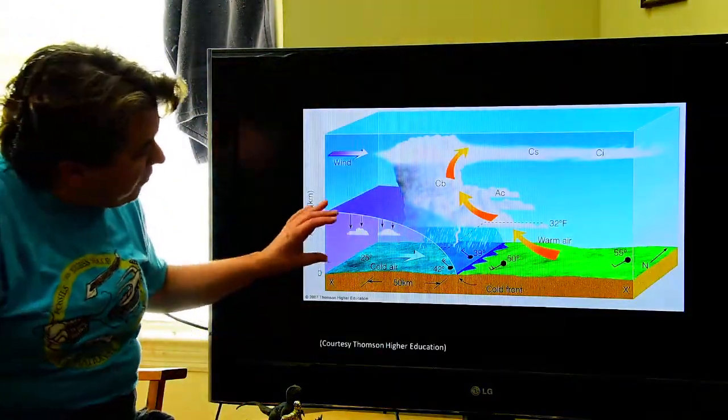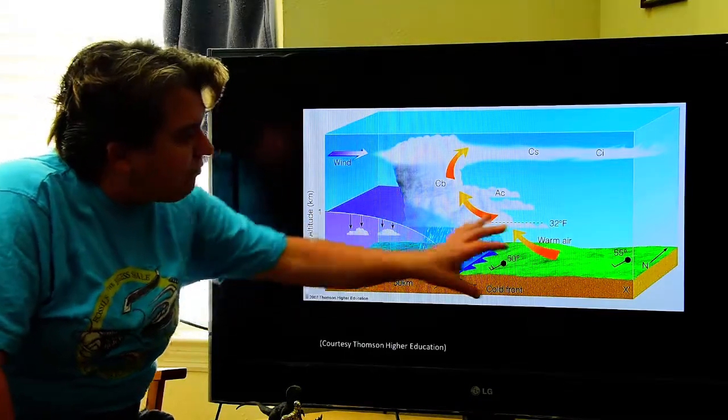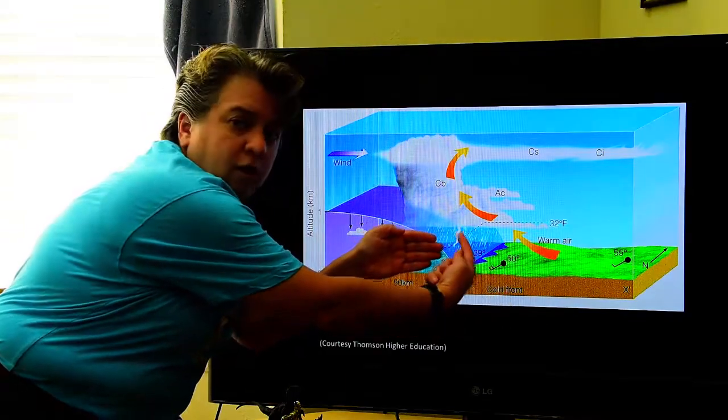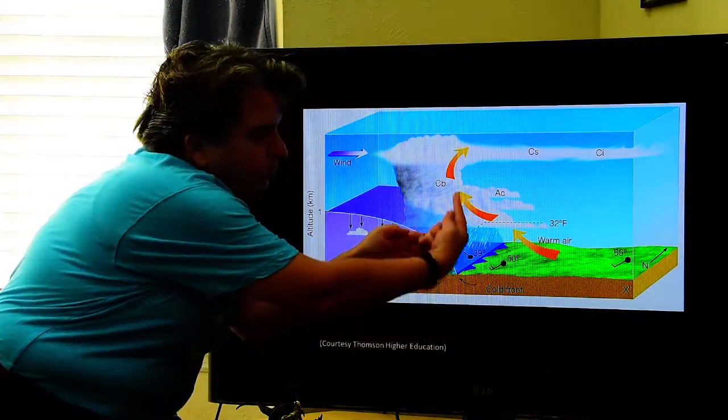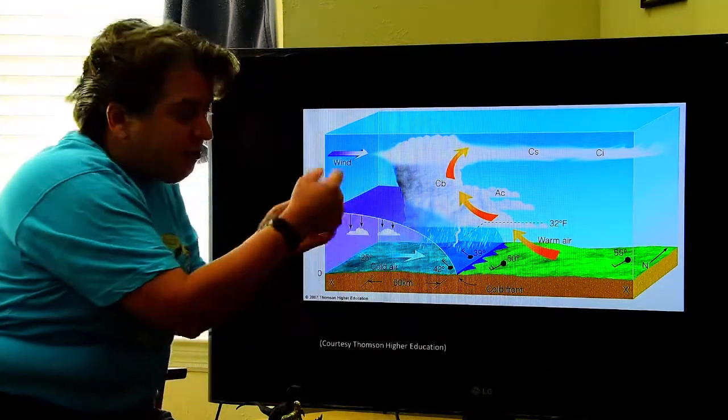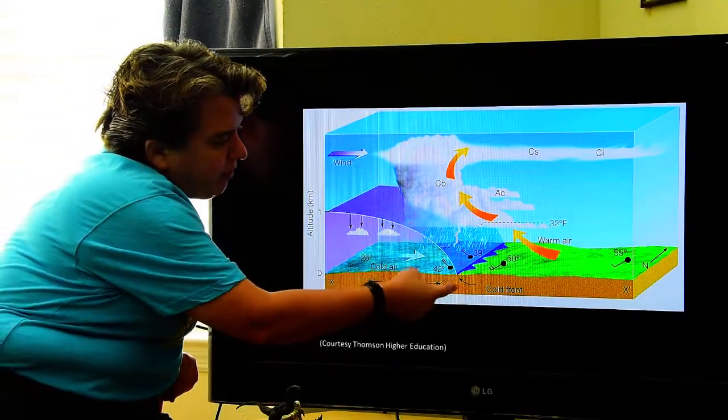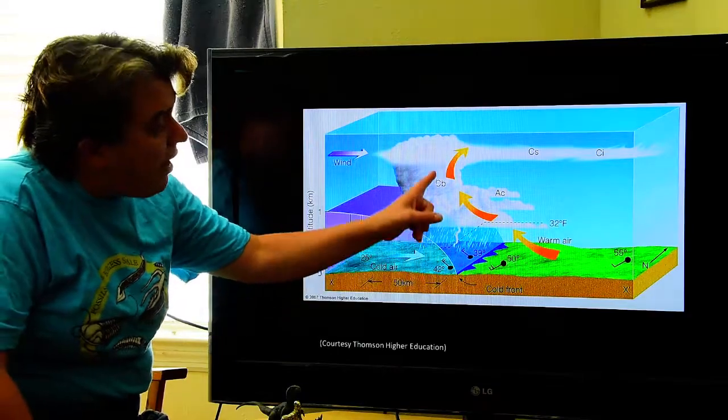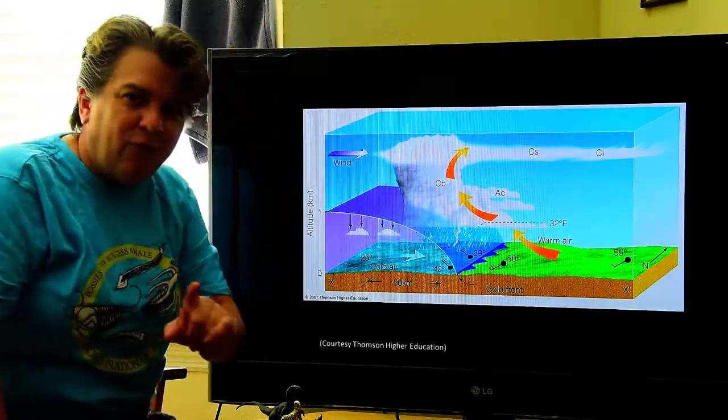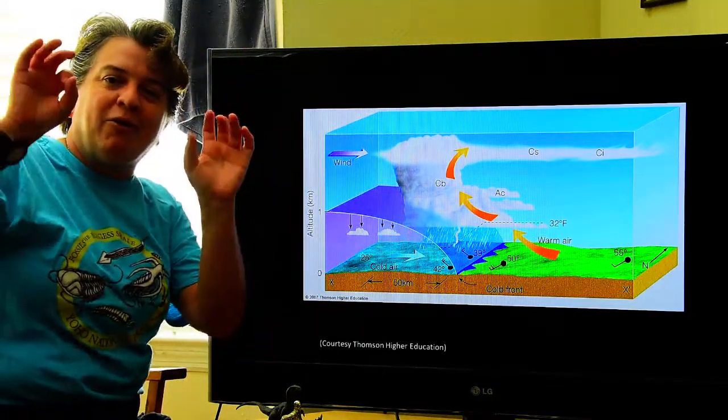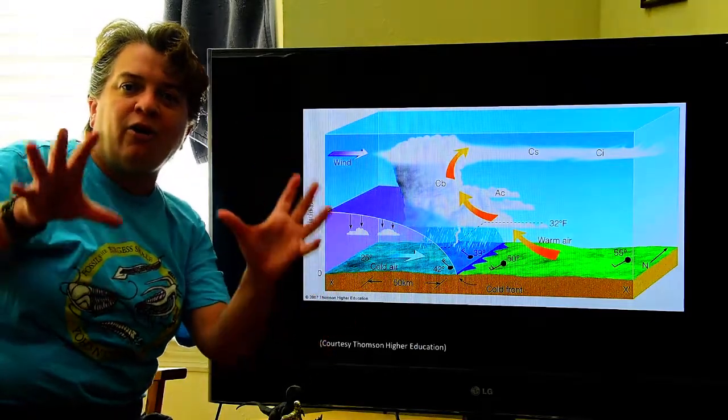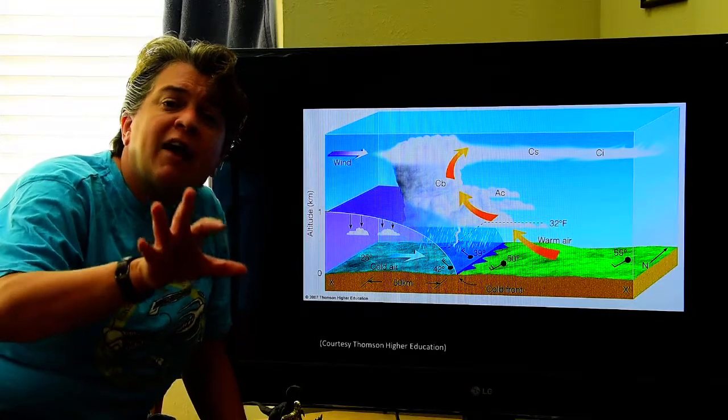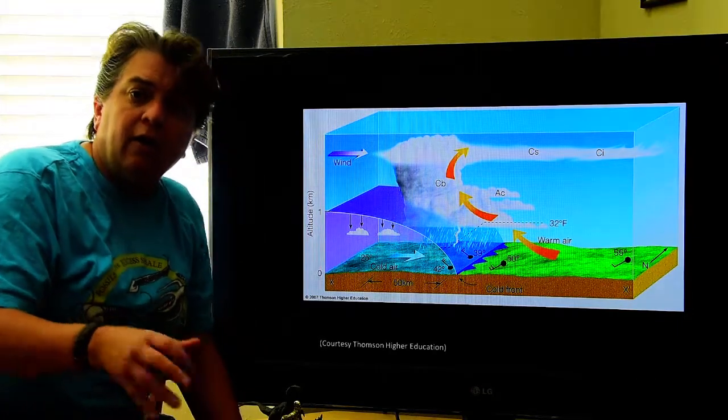So you have this cold air advancing on this warm air pocket, and that ends up causing the warm air to rapidly rise upwards. See, that's what we're trying to show here. It's rapidly rising above that cold air. And remember the rule: when warm air rises, it can no longer hold the water in it. And when we talk about the water in the air, that's humidity.